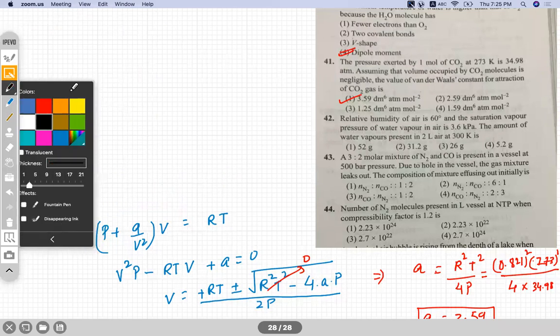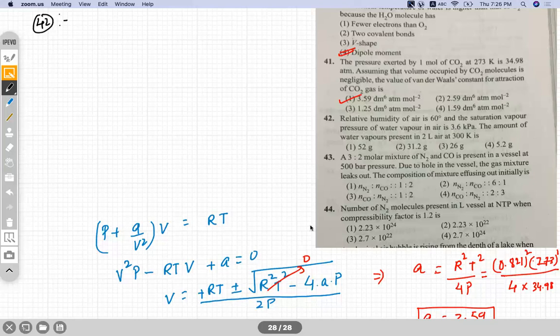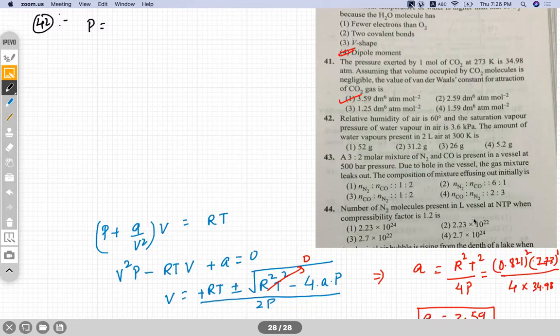Question number 42. Relative humidity of air is 60 degree, and the saturation vapor pressure of water in air is 3.6 kilopascal. The amount of water vapor present in 2 liter of air at 300 Kelvin. So pressure is 3.6 into 10 to the power minus 3 pascal. Volume is 2 into 10 to the power minus 3 meter cube, and temperature is 300 Kelvin given in the question.